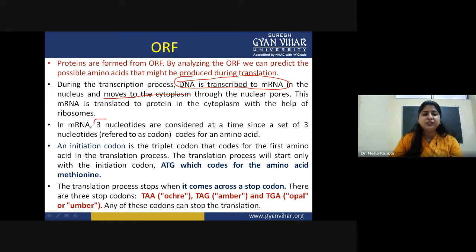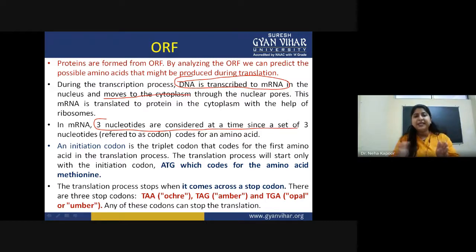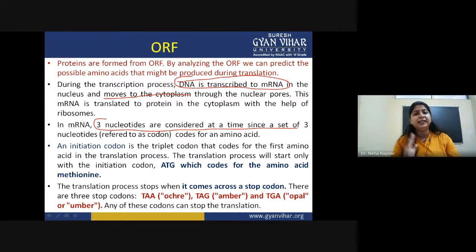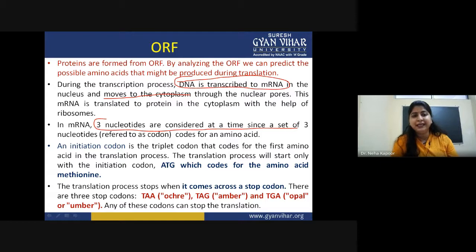Each messenger RNA is read in sets of three nucleotides called codons, each coding for a single amino acid. The complete amino acid sequence obtained from a messenger RNA is the protein. The initiation codon for translation is always the triplet ATG — adenine, thymine, guanine — coding for methionine. Translation stops when the machinery encounters a stop codon. There are three main stop codons: TAA, TAG, and TGA — or in RNA, UAA, UAG, and UGA — any of which can terminate translation.